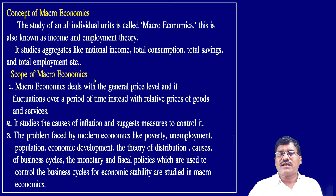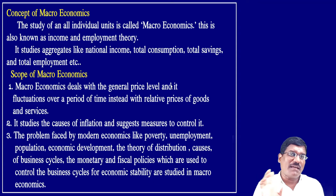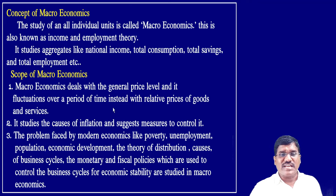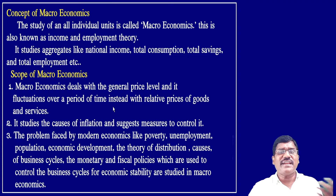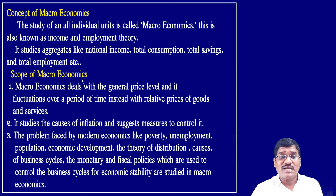The scope of macroeconomics deals with the general price level — general means total price level, not individual price. Individual price goes to microeconomics; the general price level comes under macroeconomics. So general price level and the fluctuations over a period of time — what are the fluctuations in price over a period of time instead of the relative price of goods and services.